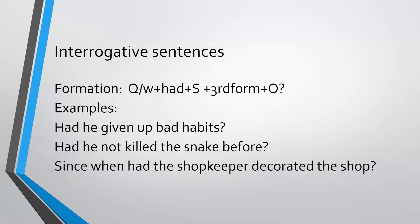Now come to the interrogative sentences. The formation is: first we use the question words, then 'had,' then the subject, third form of the verb, and the object comes at the end. Examples are: 'Had he given up bad habits?' 'Had he not killed the snake before?' 'Since when had the shopkeeper decorated the shop?'